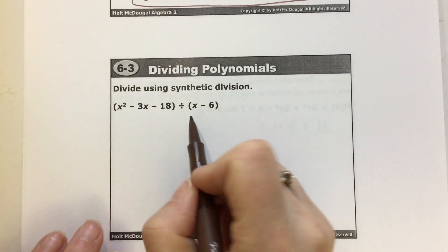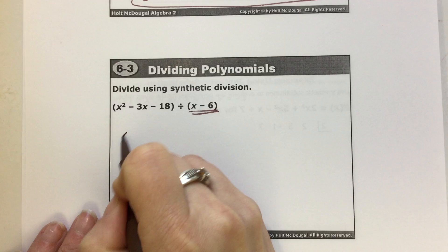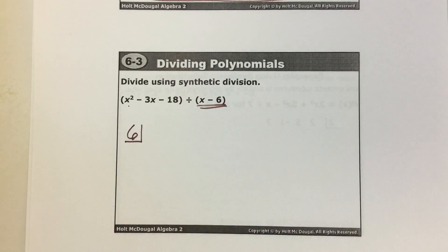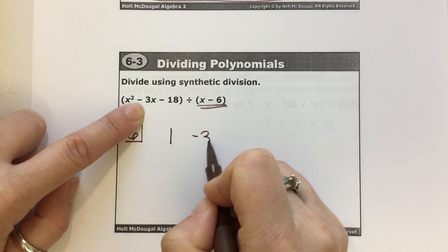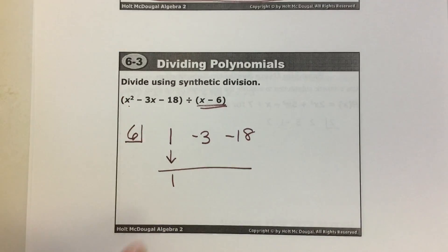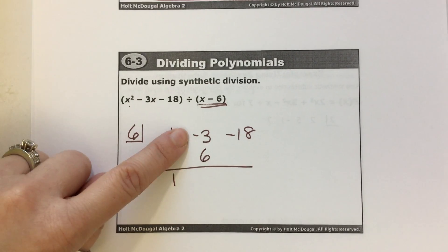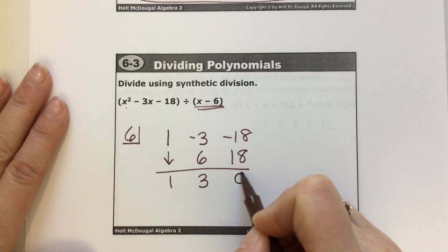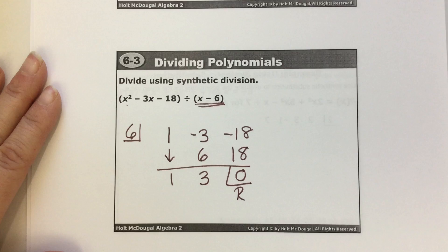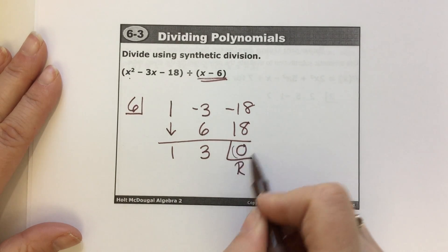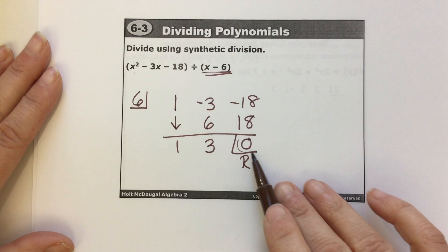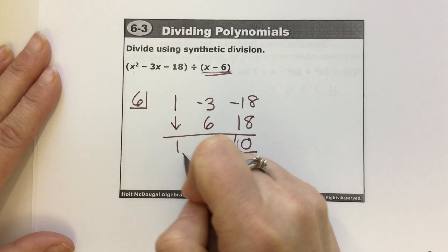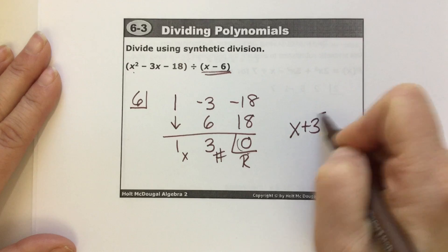Let's look at another one. We are in the form x minus 6, so 6 goes in the box — that's what you're subtracting from x. The polynomial has 2x², 1x, no x's, so no zeros needed. Coefficients: 1, negative 3, negative 18. Carry down the 1. 1 times 6 is 6. Negative 3 plus 6 is 3. 3 times 6 is 18. Negative 18 plus 18 is 0 — this divides perfectly with no remainder. Our solution is x plus 3.